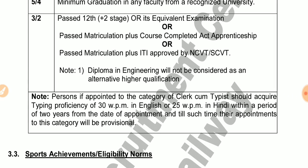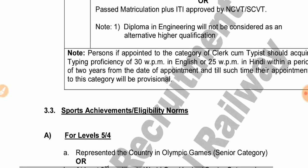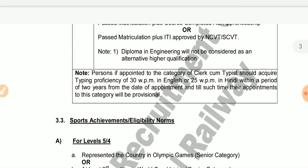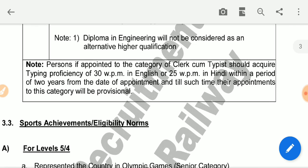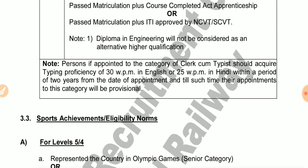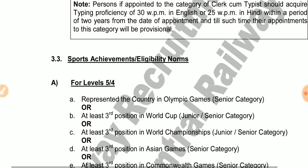Note: Diploma in Engineering will not be considered as an alternative qualification. For persons appointed to the category of Clerk Typist, they should acquire typing proficiency of 30 WPM in English or 25 WPM in Hindi within a period of 2 years from the date of appointment. Until such time, their appointment will be provisional.